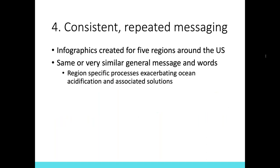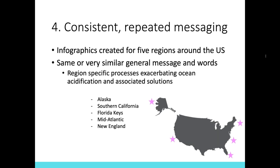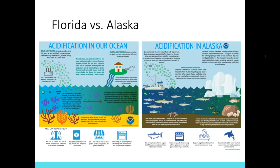Number four is consistent and repeated messaging. Now I'm going to walk you through the infographics I've created for five different regions around the United States. You'll notice they have the same or very similar general messaging and words regarding ocean acidification at large, and then each one highlights a regionally specific process that exacerbates ocean acidification and regionally specific solutions people can adopt. The five regions are Alaska, Southern California, the Florida Keys, the Mid-Atlantic, and the New England regions. I wanted to put these up side by side — not to overwhelm you — but just to highlight the similarities and differences in design and content. The animals are obviously different, indicating different ecosystems, and the coloration is a little different. On the left-hand side of each infographic I talk about ocean acidification at large, on the right is the regionally specific issue, and at the bottom there are solutions.